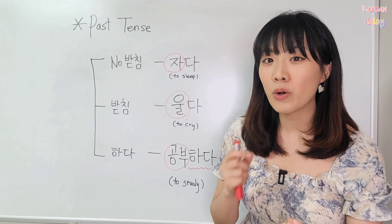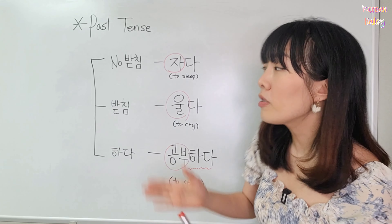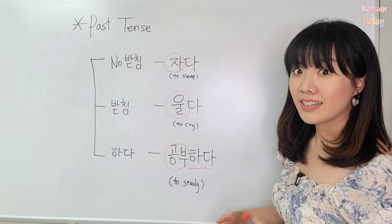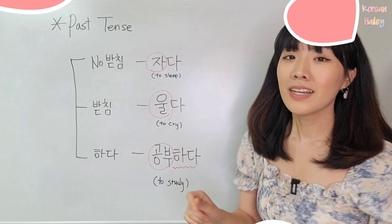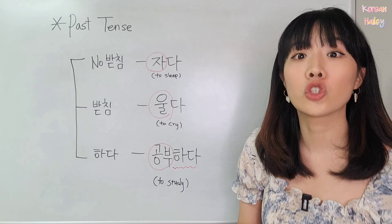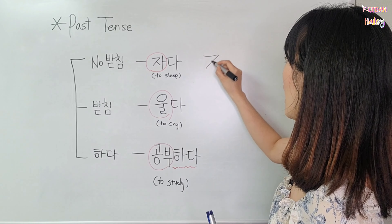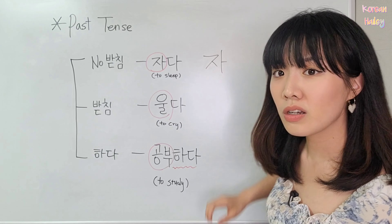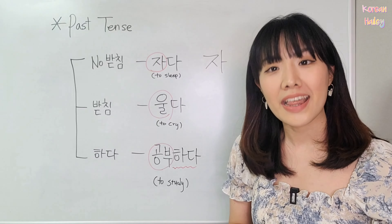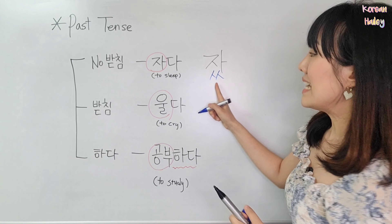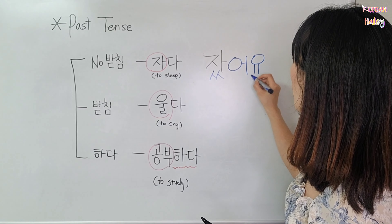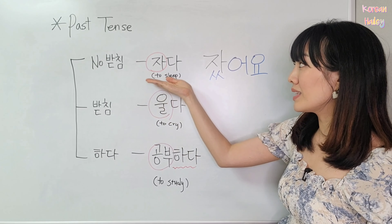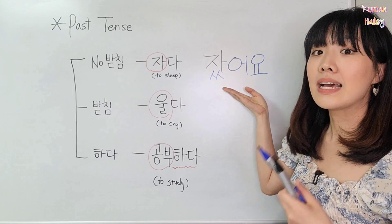From now on, I'm going to change these verbs from dictionary form to past tense — sleep becomes slept, cry becomes cried, study becomes studied. Let's start with 자다. Write 자다, then delete 다 because it's the dictionary form with no meaning. Then put double 시옷 and then 어요. It becomes 잤어요. So 자다 (to sleep) becomes 잤어요 (slept).